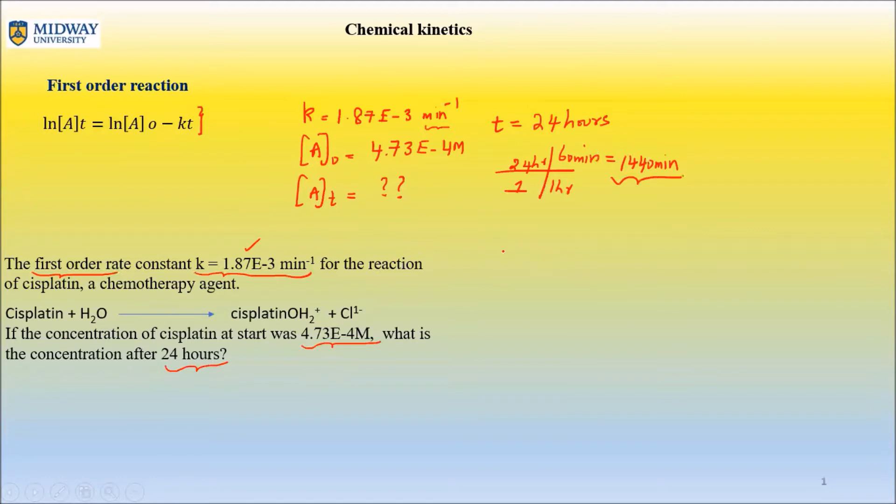So let's go ahead and solve the problem. So natural log of AT equals natural log of A0, which is 4.73 E to the negative four minus K value is 1.87 E to the negative three times 1440. So that'll be natural log of 4.75 E to the negative four is negative 7.6 minus this whole thing. 1.87 E to the negative three times 1440. So that's about 2.69.